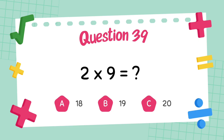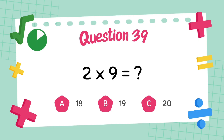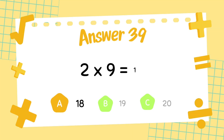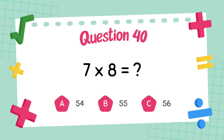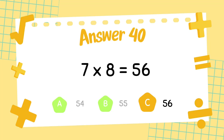What is 2 multiply 9? The answer is 18. What is 7 multiply 8? The answer is 56.